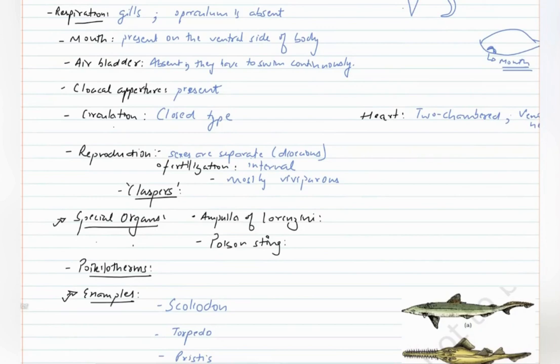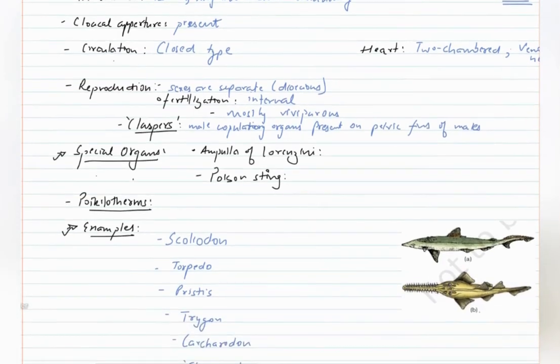Claspers are male copulatory organs present on pelvic fins of males.